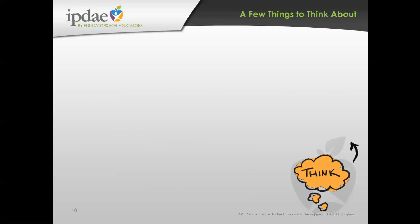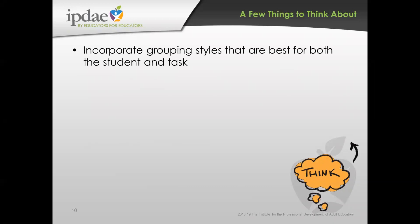Dr. Lieb also talks about what we need to do differently when working with adult students. Number one, we need to look at grouping styles that are best for both the student and the task — students who like individualized learning, large groups, or small groups. We have to look not only at them but at what we're teaching. Some educators believe we must mix groups so all levels are represented — heterogeneous grouping — while others believe organizing by ability levels has advantages. Marzano and Pickering talk about advantages to both.